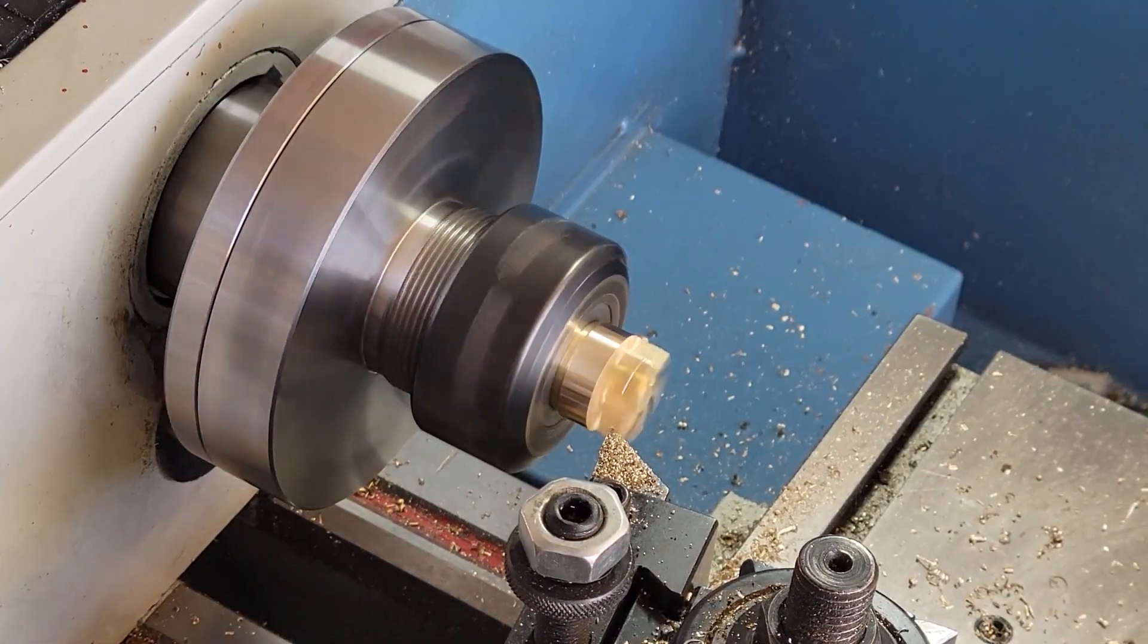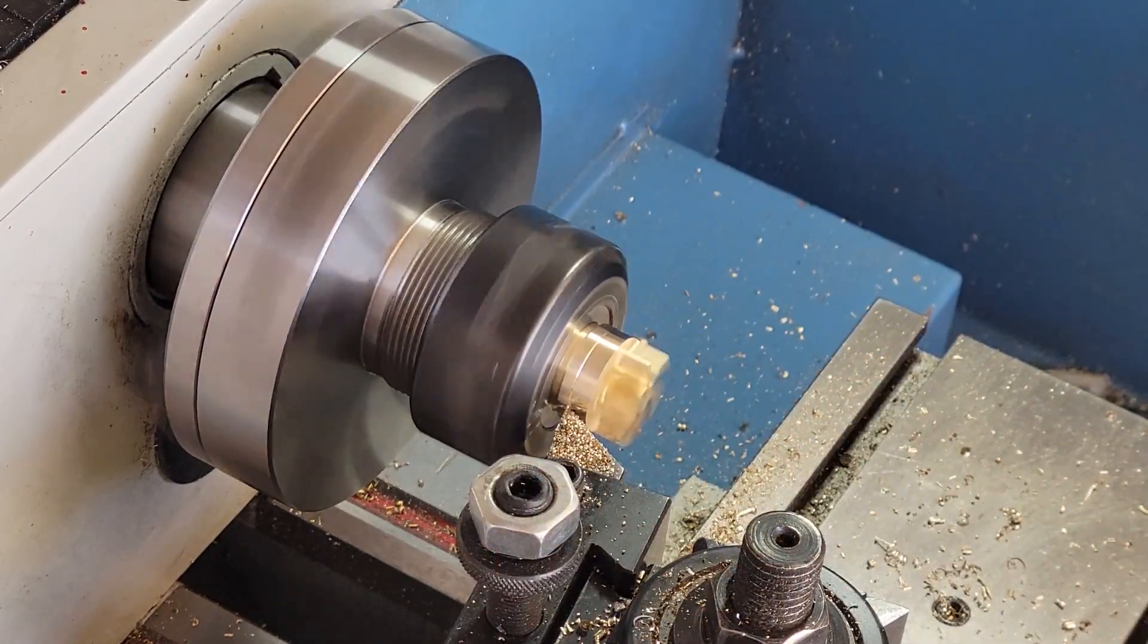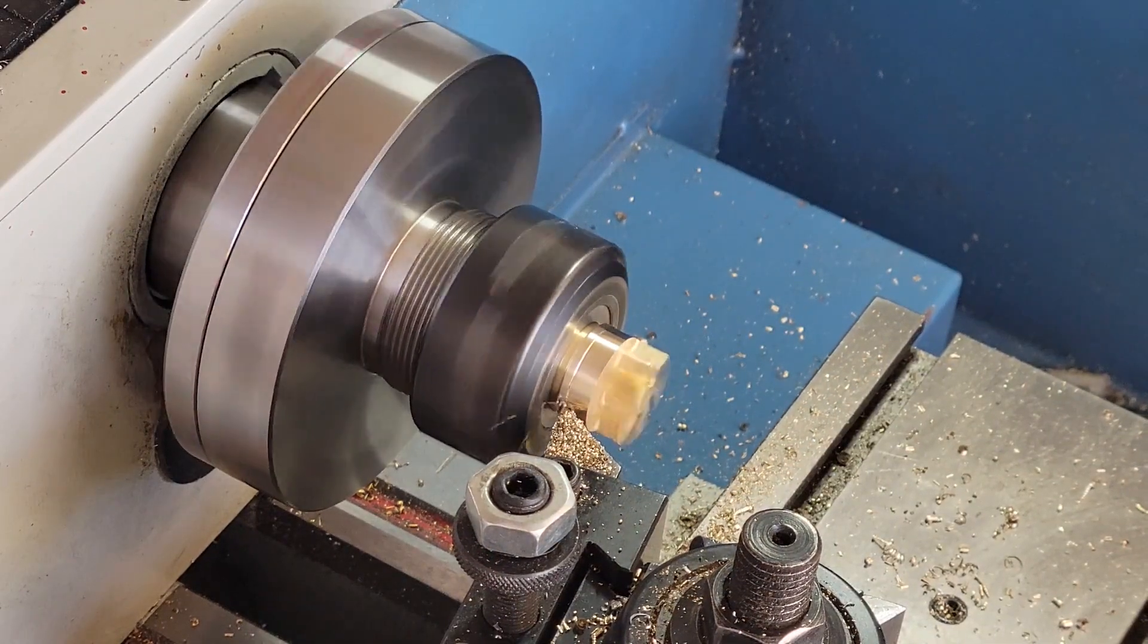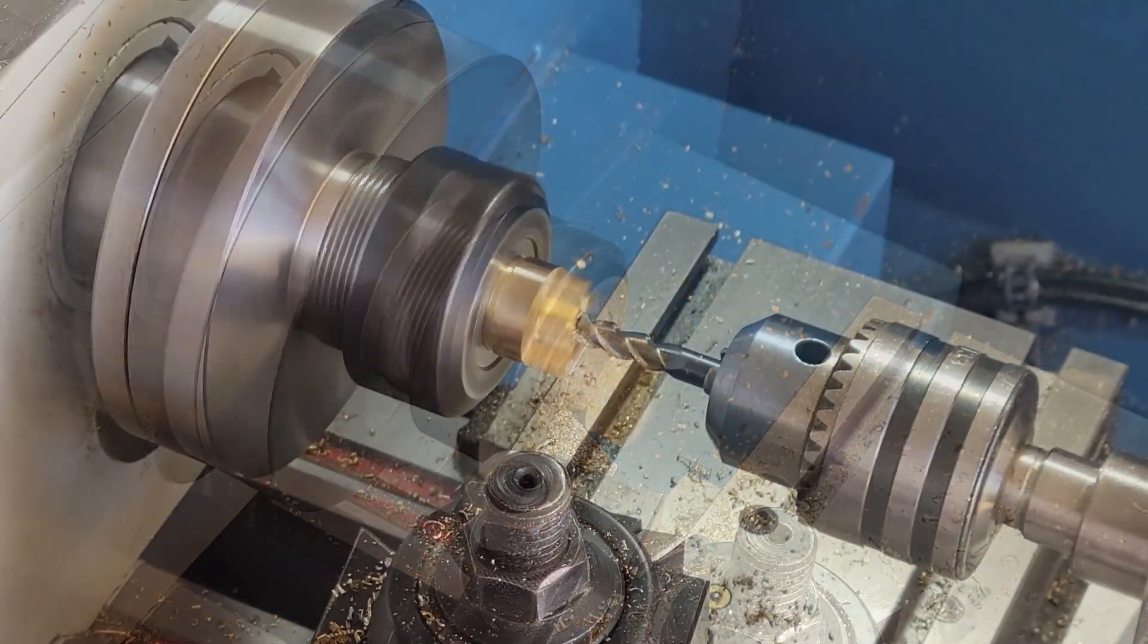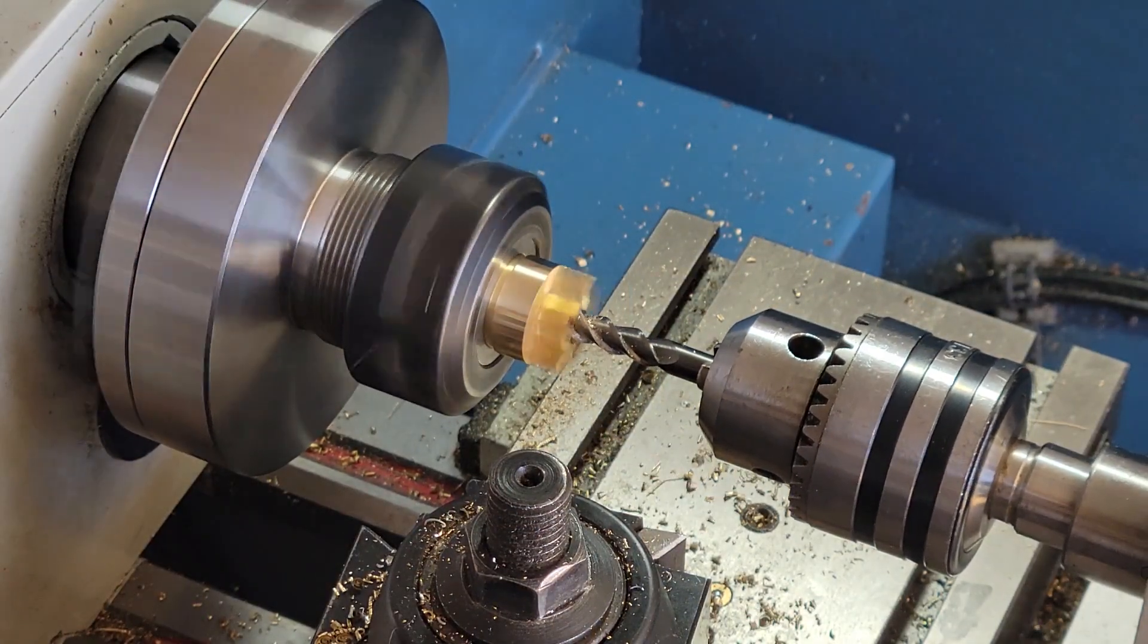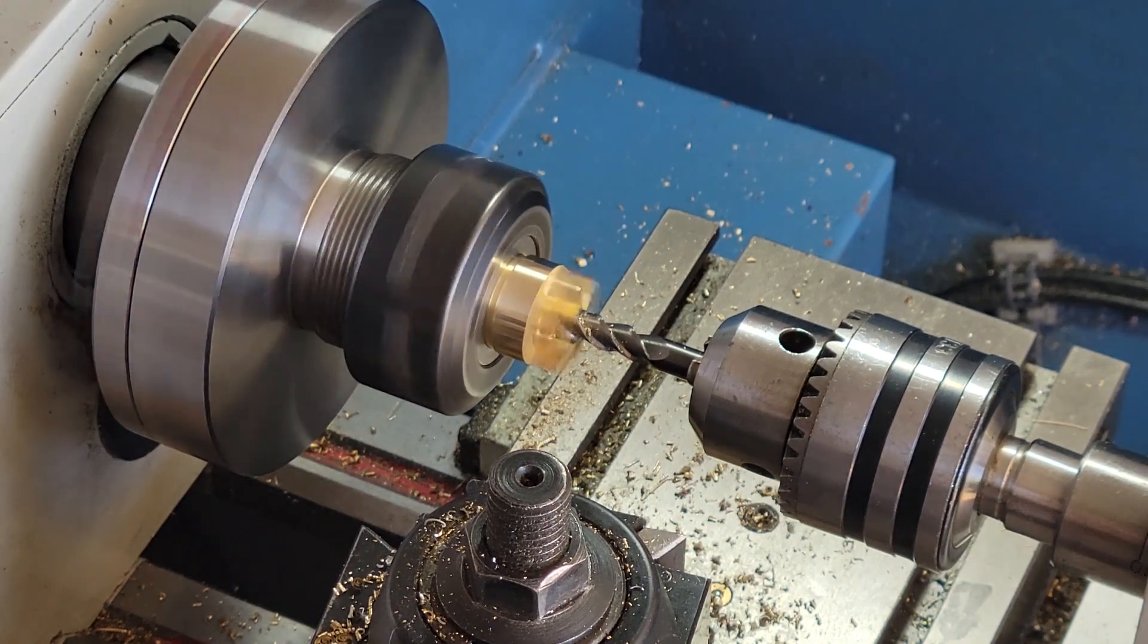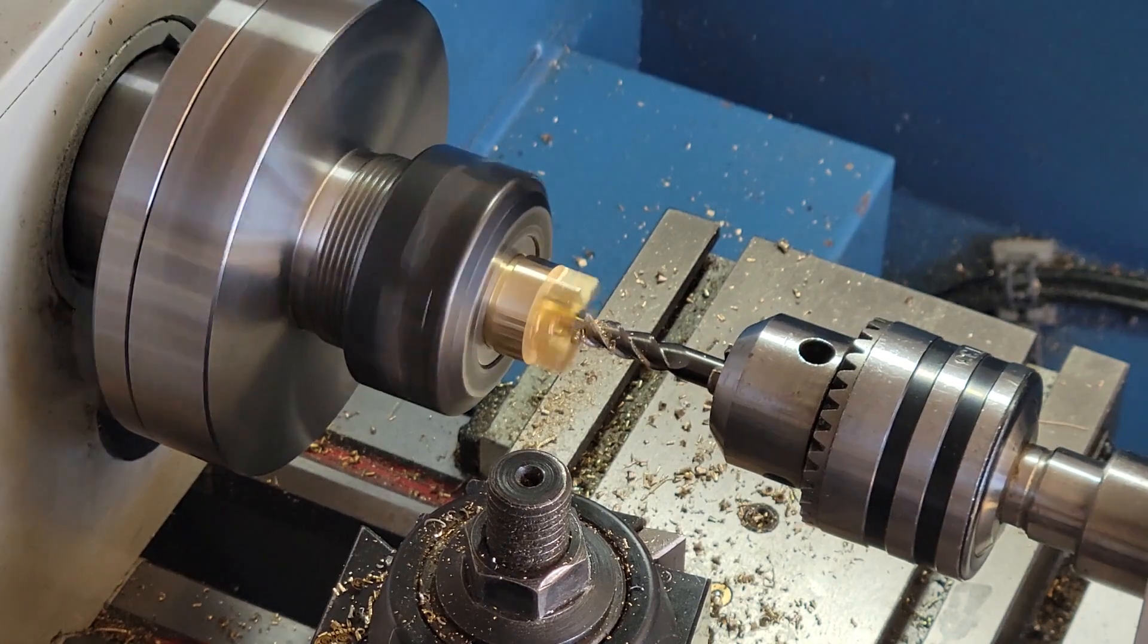We start by turning down the outside diameter of our impeller to 0.8 inches. Then we use a quarter inch end mill and bring it and create a 0.125 inch deep pocket. This is the water entry point in our impeller.